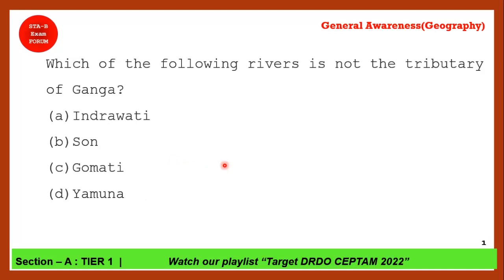Next question: Which of the following rivers is not a tributary of Ganga? The correct answer is option A — Indravati. Indravati is not a tributary of Ganga, whereas Gomti and Yamuna are all tributaries of the Ganga river.